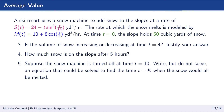Is the volume of snow increasing or decreasing at time t equals 4? We compare s of 4, the rate snow is being added, with m of 4, the rate it's melting. s of 4 equals 23.682 cubic yards per hour, and m of 4 equals 11.882 cubic yards per hour. Since snow is being added at a faster rate than it is melting, the volume at that moment is increasing.